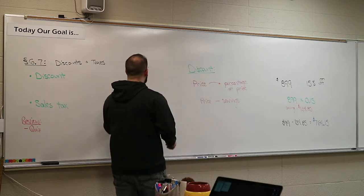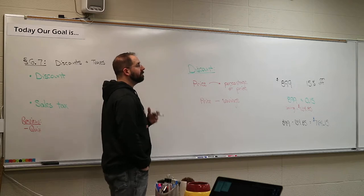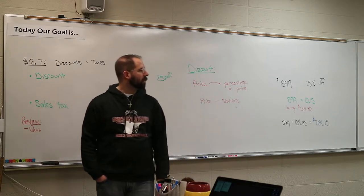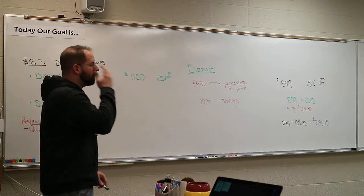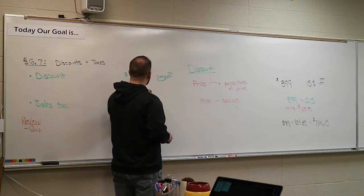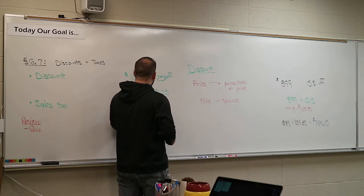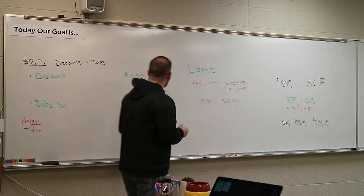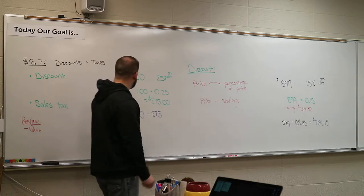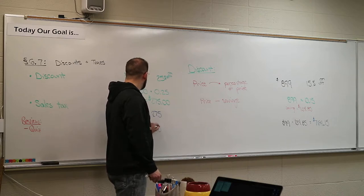Target had the iPhone X for $1,100, but they're offering 25% off. So you take $1,100 multiplied by 0.25, which gives you $275. That's coming off the price. So you subtract: $1,100 minus $275 equals $825 even.